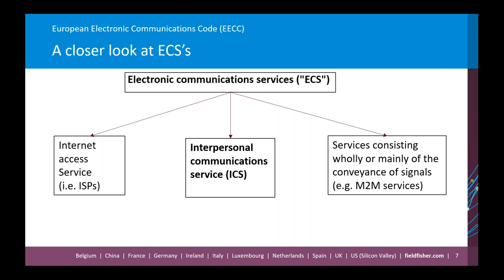The ICS category now includes activities typically carried out by OTTs, whether or not their services consist wholly or mainly in the conveyance of signals on ECNs. ICS are defined as services that enable interpersonal and interactive exchanges of information — including traditional voice calls, all types of email, messaging services, and group chats. The ECS still excludes content services, so a shopping portal or an electronic newspaper won't be caught.